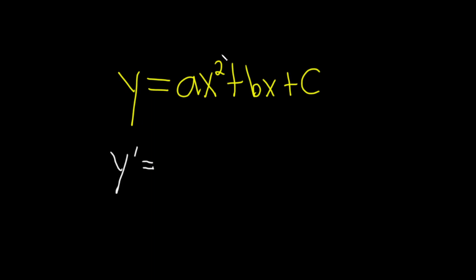So we have a times x squared. We have to differentiate this piece. Because a is a constant it stays there and we use the power rule on the x squared.